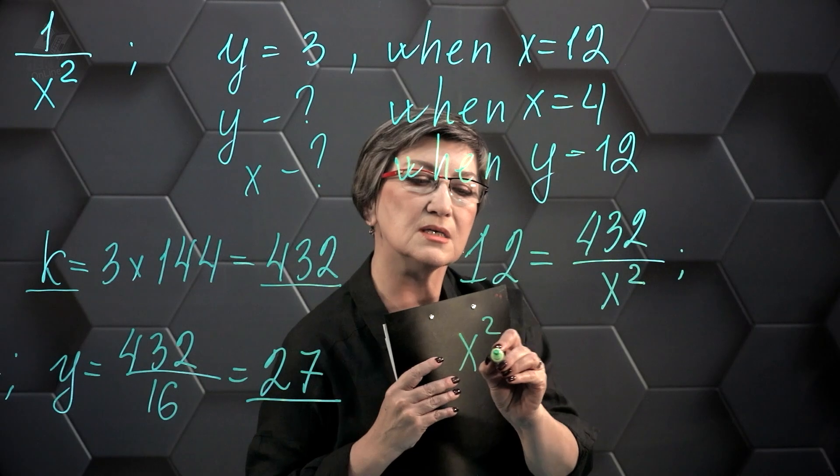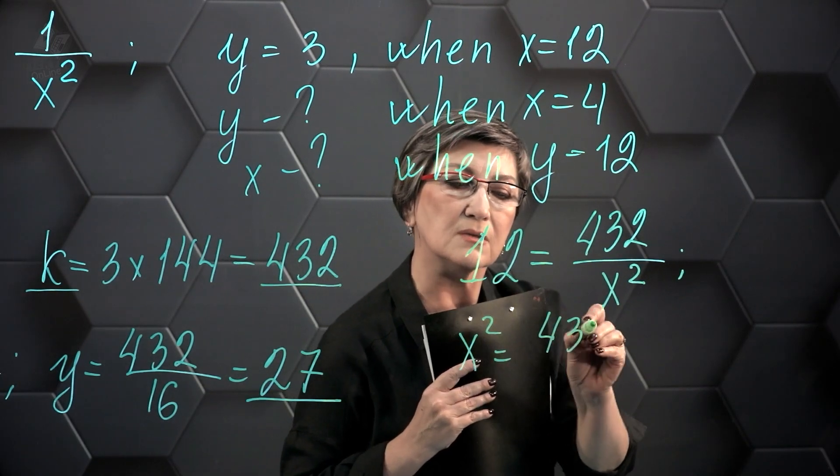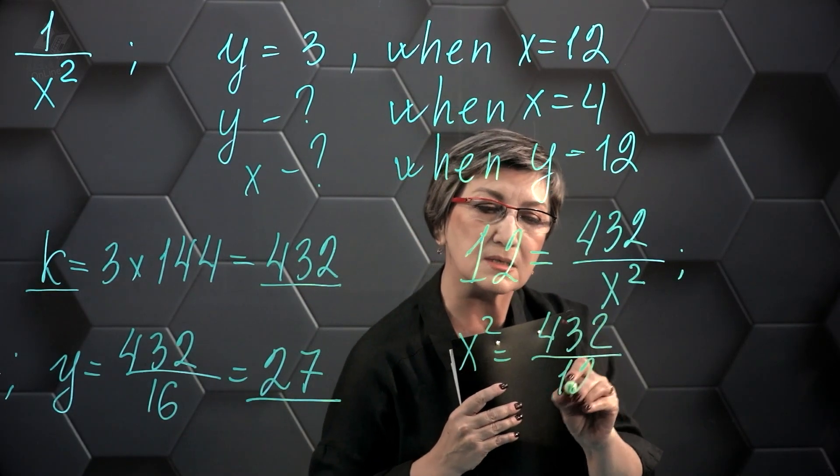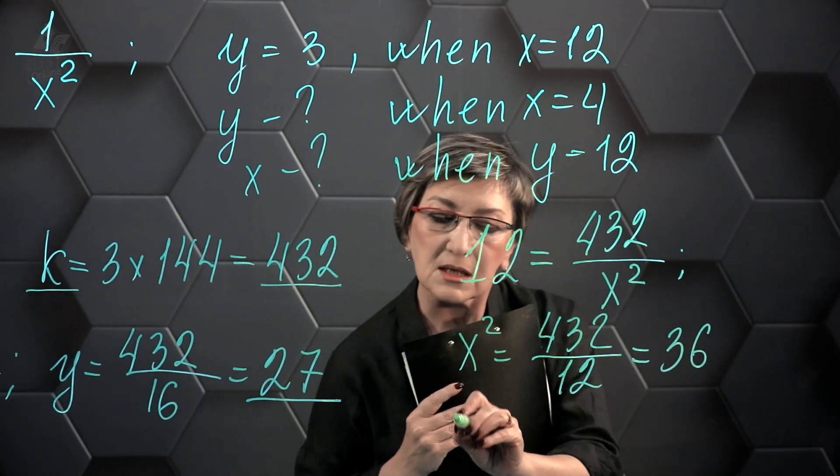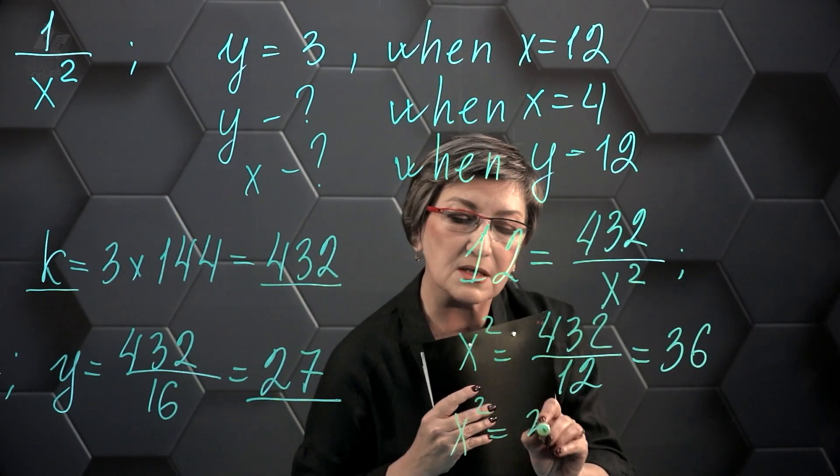X squared equals 432 divided by 12. And 432 divided by 12 is 36. X squared equals 36.